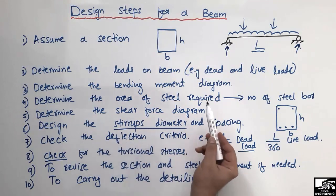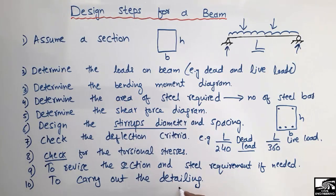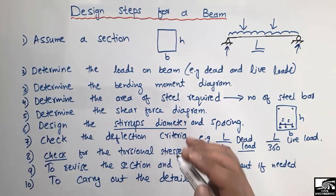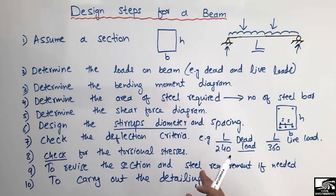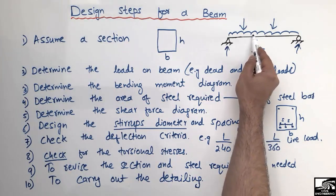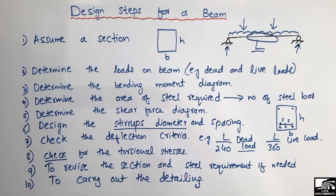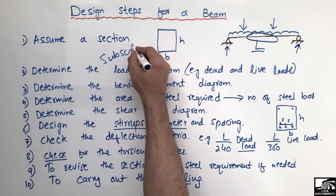The last step is to carry out the detailing of the beam. Detailing includes providing symmetric spacing between the steel bars and between the stirrups. Sometimes we provide closer spacing between stirrups near the supports and wider spacing at the mid-section. Correct detailing plays an important role in beam design because it increases the ductility of the beam system. Hope you guys understand — don't forget to subscribe to the channel. Thank you for watching.